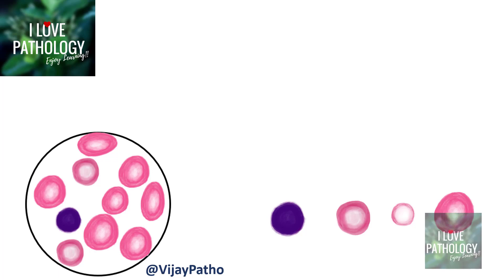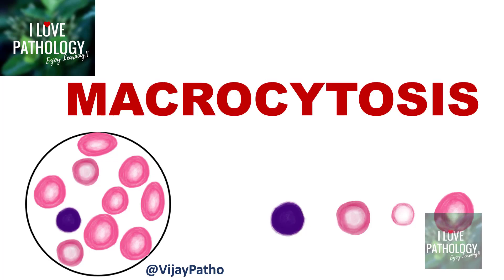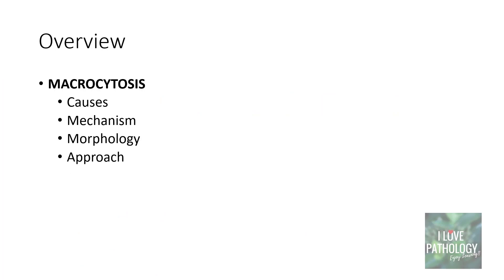Hello everyone, welcome to this short tutorial from Pathology Made Simple at ilopathology.com. The topic I am discussing today is macrocytosis. After having completed two important topics in hematology — microcytic hypochromic anemia and normocytic normochromic anemia — we will now discuss macrocytosis: the causes, the mechanism, the morphological features, and finally how to approach a case of macrocytosis.